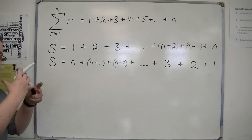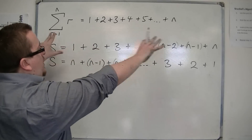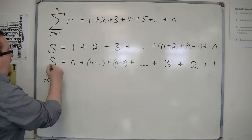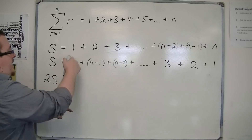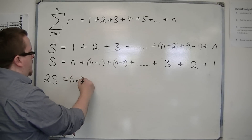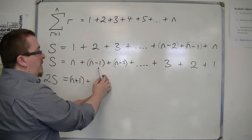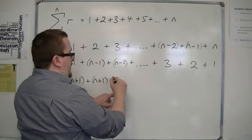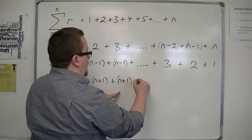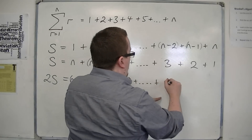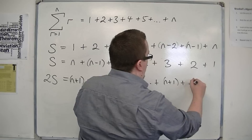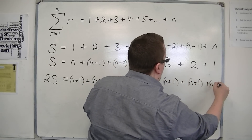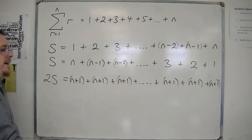If I add these two sequences together, I get 2S equals n plus 1, plus 2 plus n minus 1 which is n plus 1, plus 3 plus n minus 2 which is n plus 1, plus dot dot dot, plus n plus 1. So all of the terms equal n plus 1.